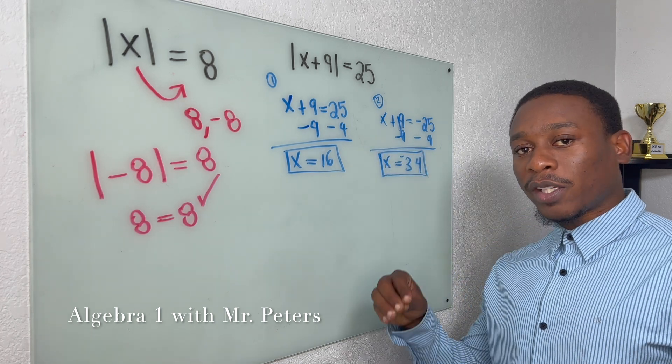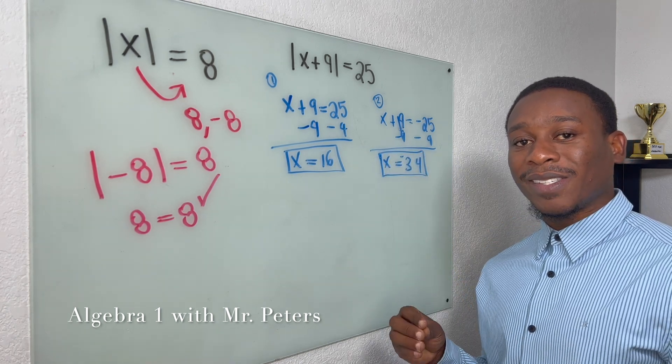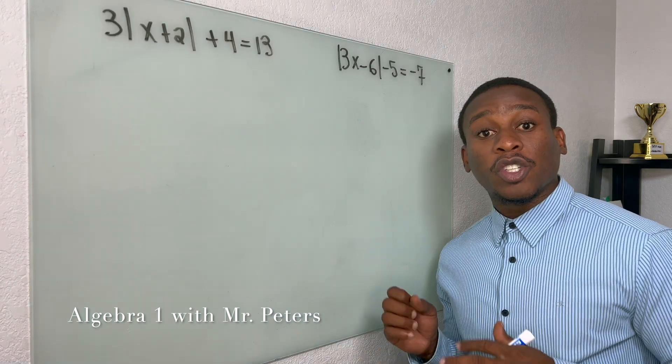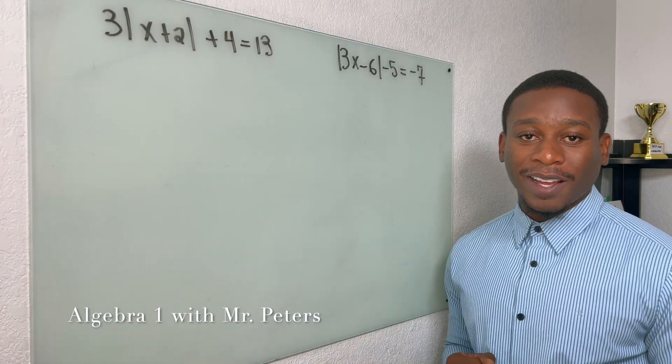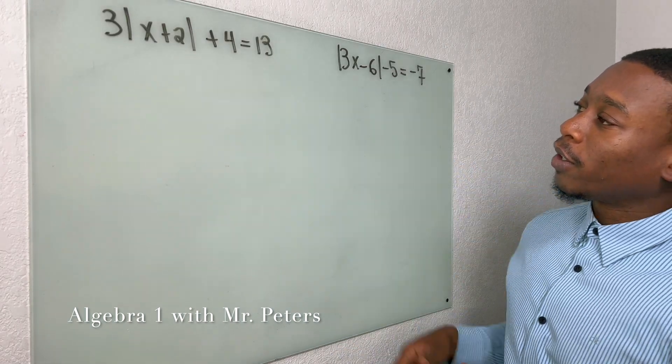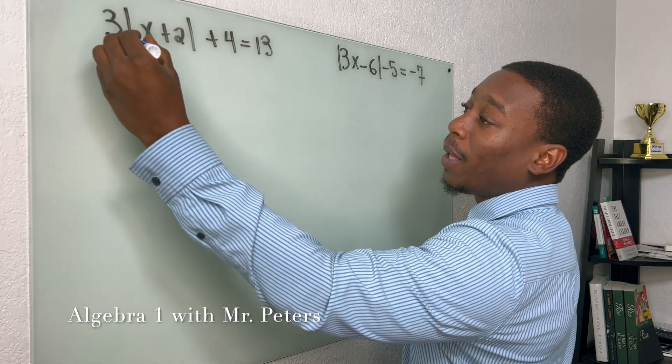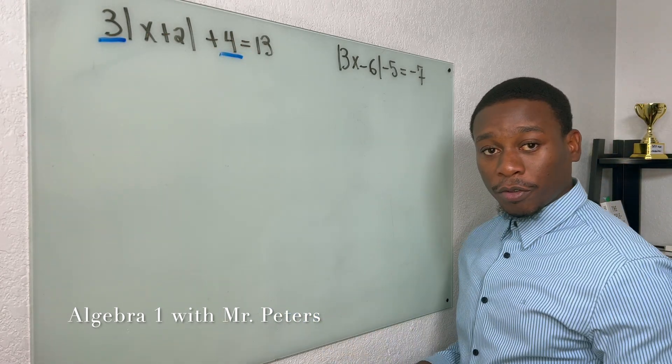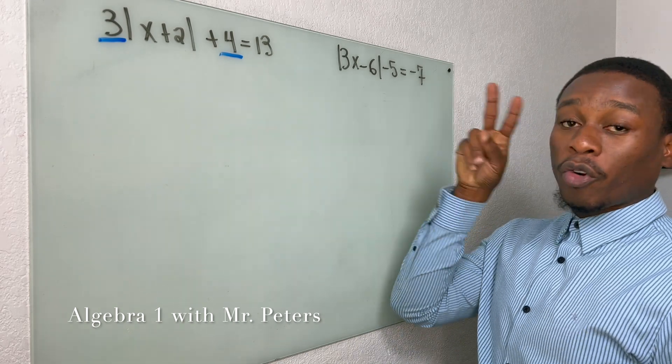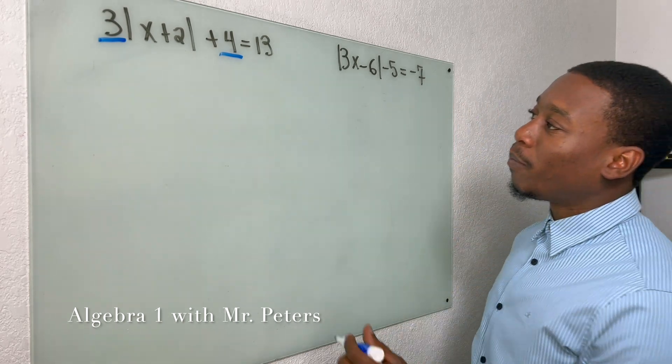In our next problems we're going to look at some more absolute value questions that are more complicated. So we're moving on to the last two problems, and when we look at this first example we notice that the absolute value is not by itself. So for us to solve and create the two equations, we got to get it by itself.